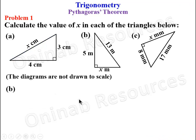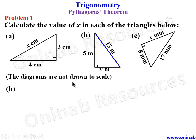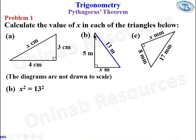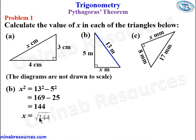We go to problem one B. The hypotenuse here is 13 meters, and the unknown is one of the other two sides. So X squared is equal to the hypotenuse squared minus the square of the other side: 169 minus 25, giving 144. Since X squared equals 144, X is the square root of 144, which gives 12. That's the end of problem one B.